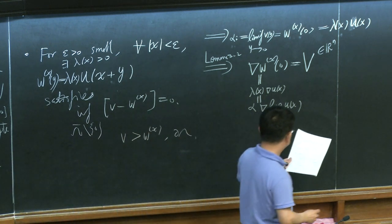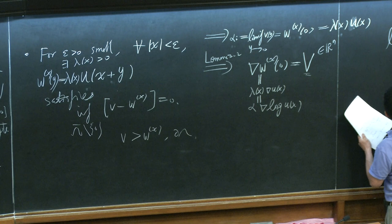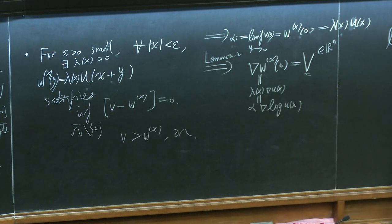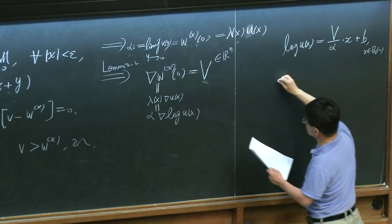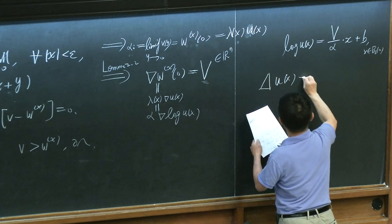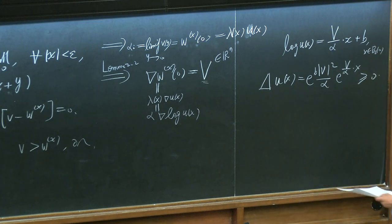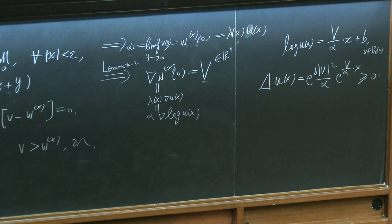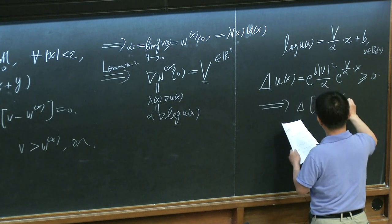This is clearly equal to lambda of X times W of U of X by definition — it's just a translation. If you put zero, this is the value. Taking the derivative, this will be equal to lambda of X times gradient U of X. Replacing lambda through here, we are going to see this is alpha divided by U — it's the gradient of log U of X. So that means for every X we have this, which means log U of X is going to be equal to this vector dot X plus a constant, for all X in B_epsilon. So this is exponential, and if we calculate Laplacian U, it's going to be greater than zero.